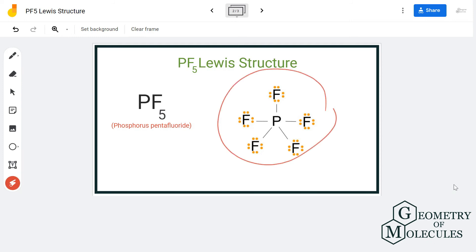This is the Lewis structure for PF5, with five single bonds between phosphorus and fluorine atoms. The phosphorus atom has more than eight valence electrons in its outer shell because it is an exception to the octet rule, meaning it can accommodate more than eight valence electrons.